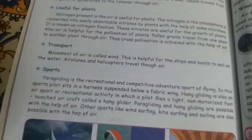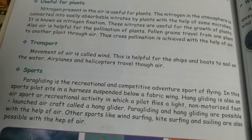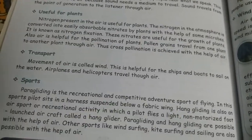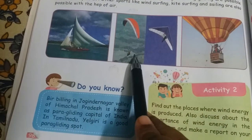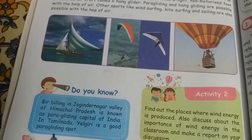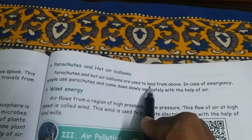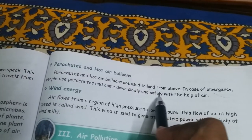Windsurfing and kitesurfing are also possible with the help of air. Parachutes and hot air balloons are used to land from above. In case of emergency, people use parachutes and come down slowly and safely. Bir Billing in Himachal Pradesh is known as the paragliding capital of India, and Elagiri in Tamil Nadu is also a popular paragliding spot.